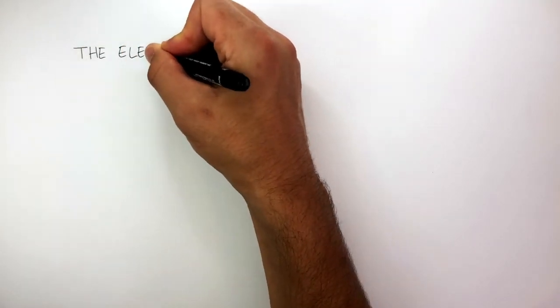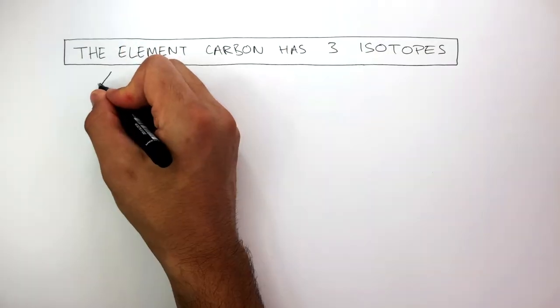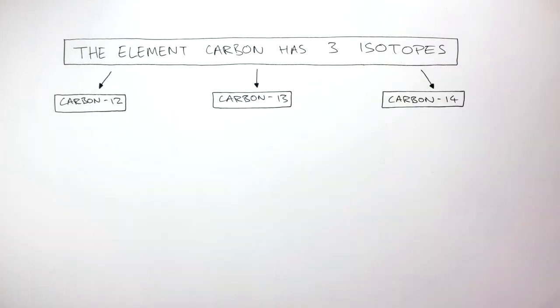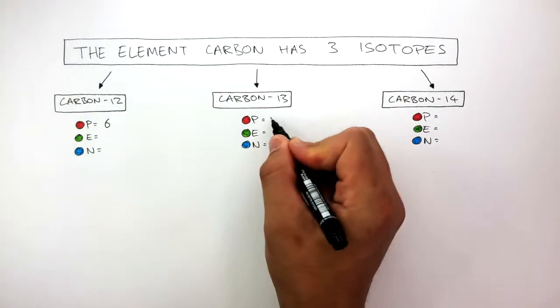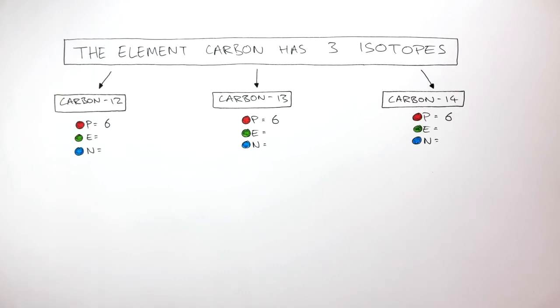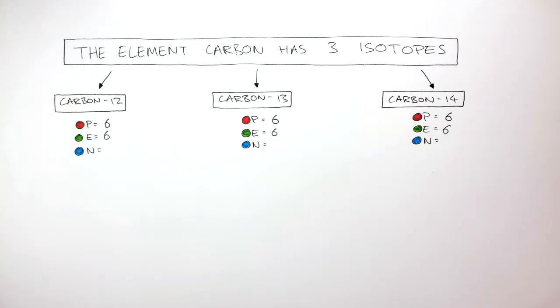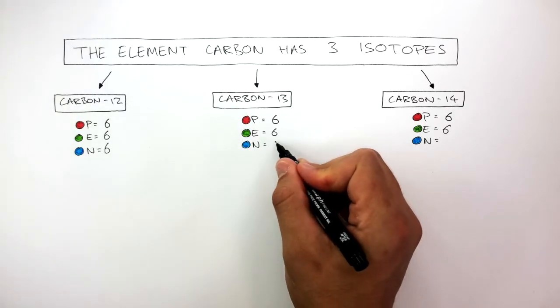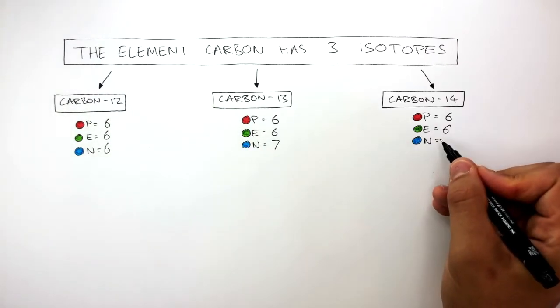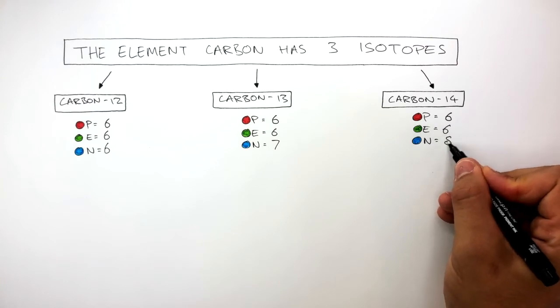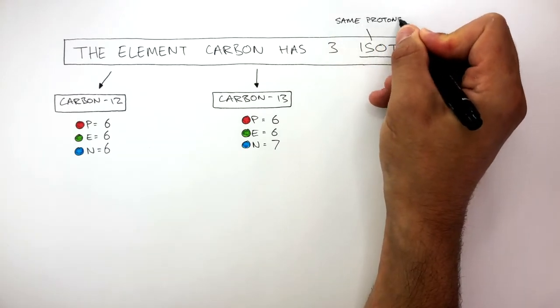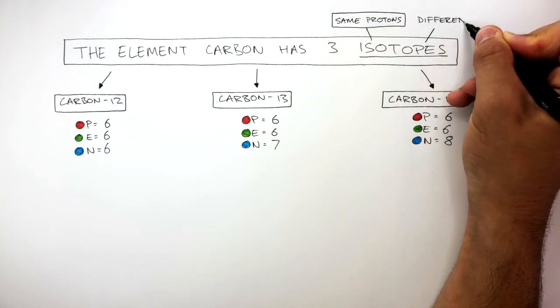The element carbon has 3 isotopes: carbon-12, carbon-13, and carbon-14. All 3 isotopes have 6 protons, as they're the same element. They all have 6 electrons, and then carbon-12 has 6 neutrons, carbon-13 has 7 neutrons, and carbon-14 has 8 neutrons. We can see these are isotopes, as they have the same number of protons and a different number of neutrons.